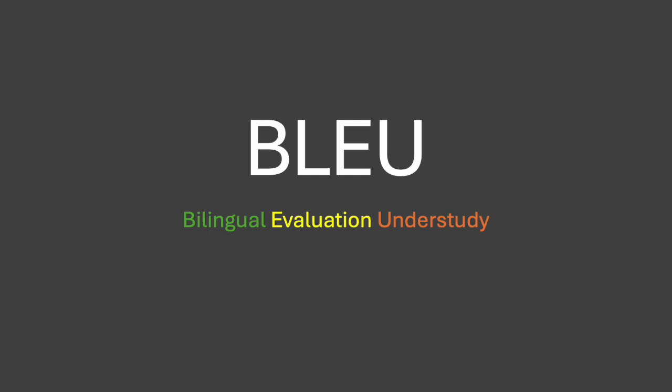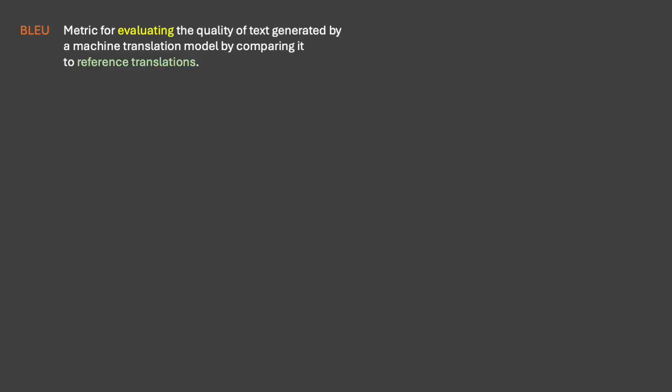BLEU lets us measure the effectiveness of an ML model for text translation or summarization in a broader way. In this video we will uncover what BLEU is, how we use it, and how the internals of BLEU work. BLEU is a metric for evaluating the quality of text generated by a machine learning translation model by comparing it to a reference translation.